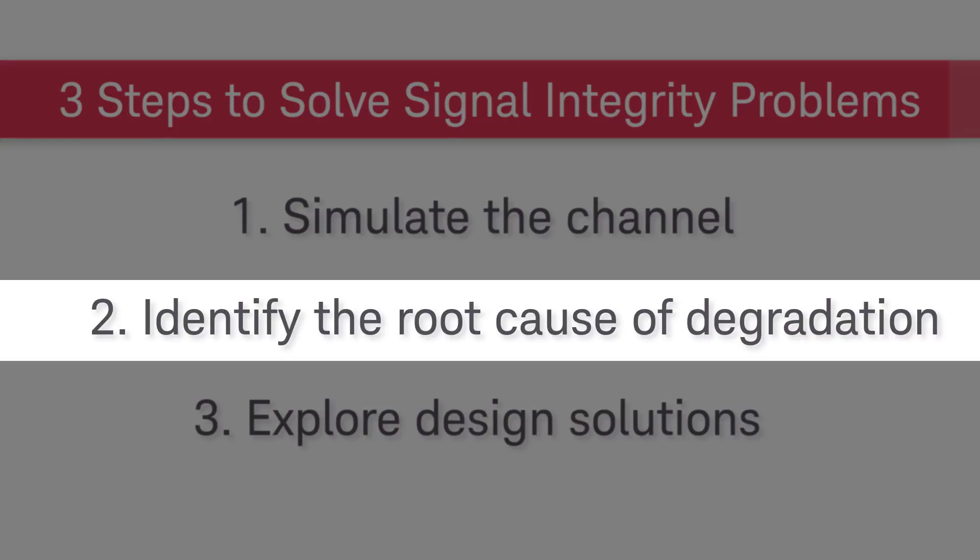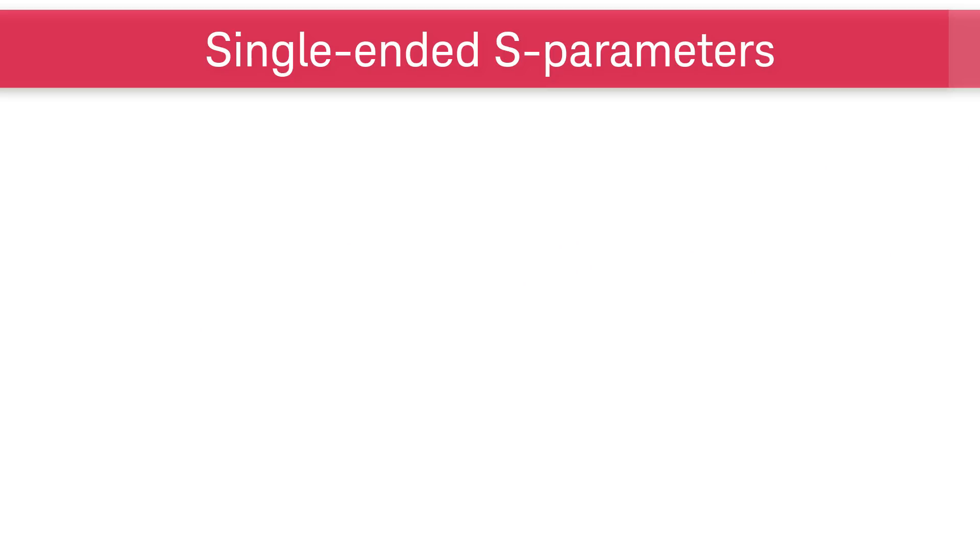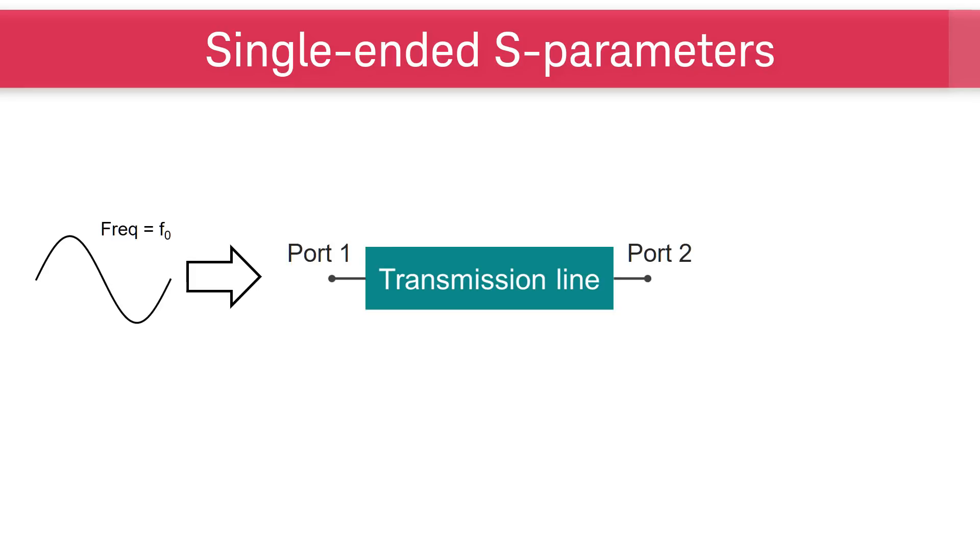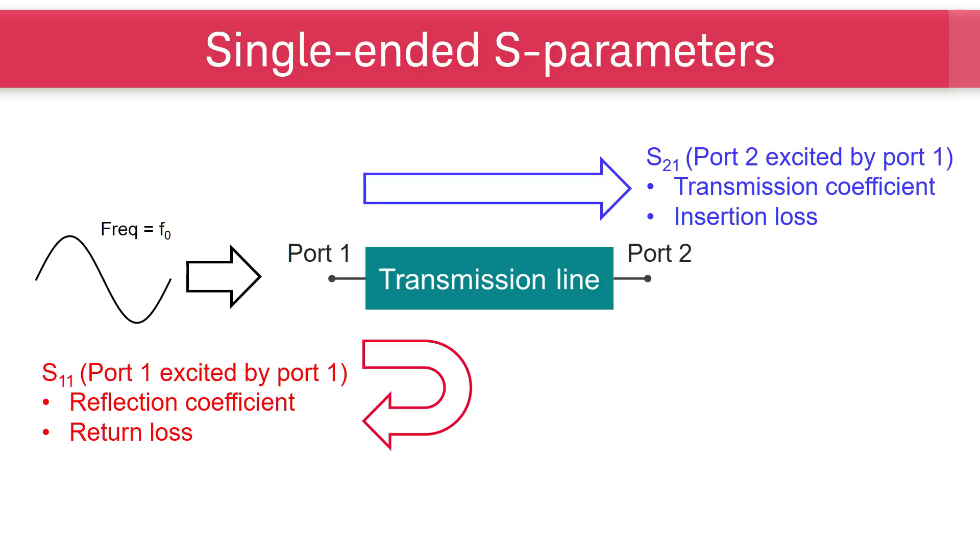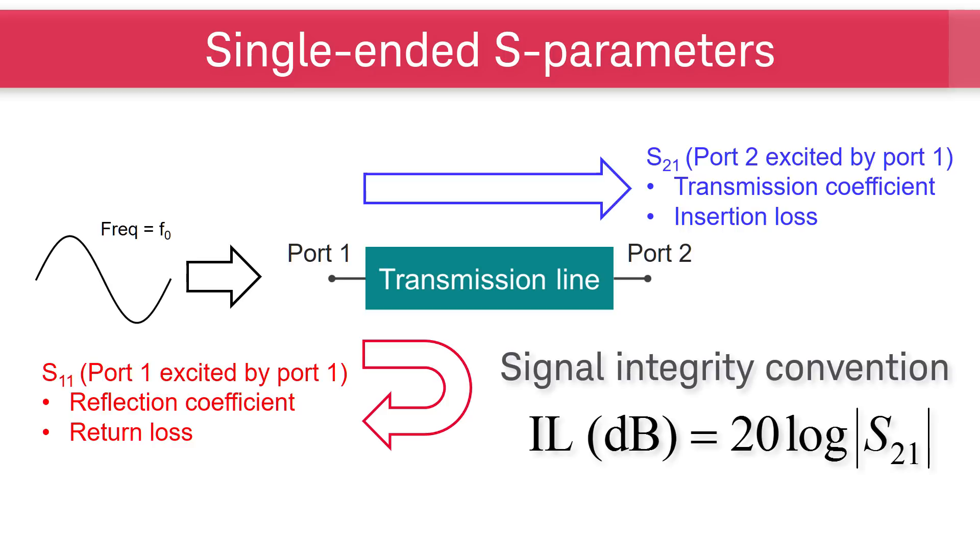Next, we will find the root cause of degradation with mixed-mode S-parameter analysis and time domain reflectometry. If we have a section of transmission line and we send a sine wave of frequency F0 at port 1, the S11 tells us how much the sine wave is reflected back out of port 1. It is a reflection coefficient and is related to the return loss. The parameter S21 gives us information on how the transmission line transmits the sine wave. It is the transmission coefficient and is related to the insertion loss.